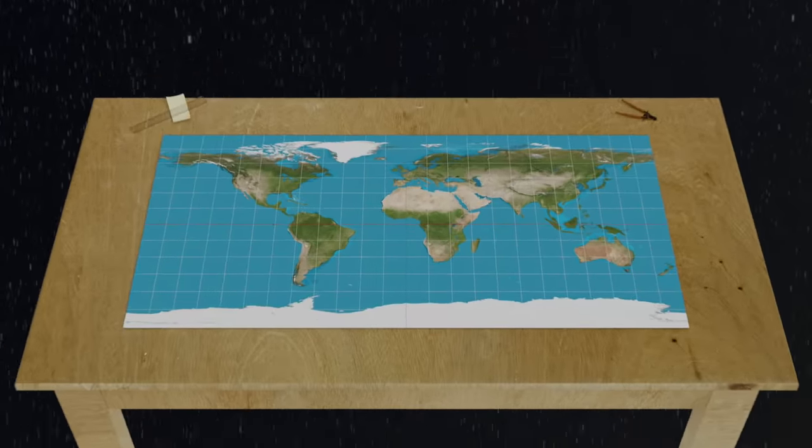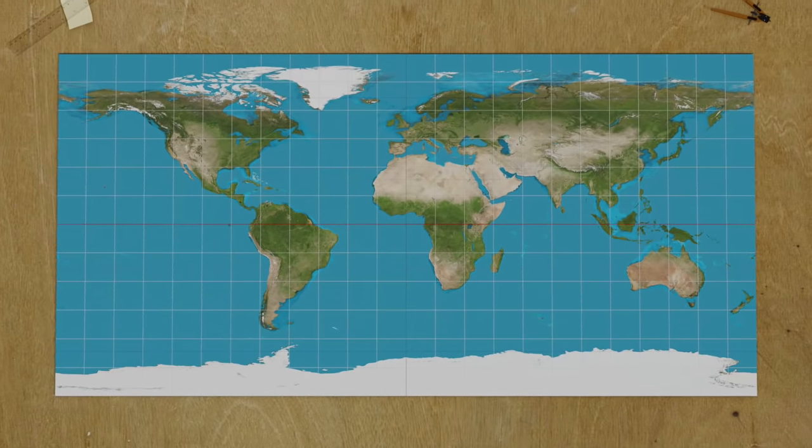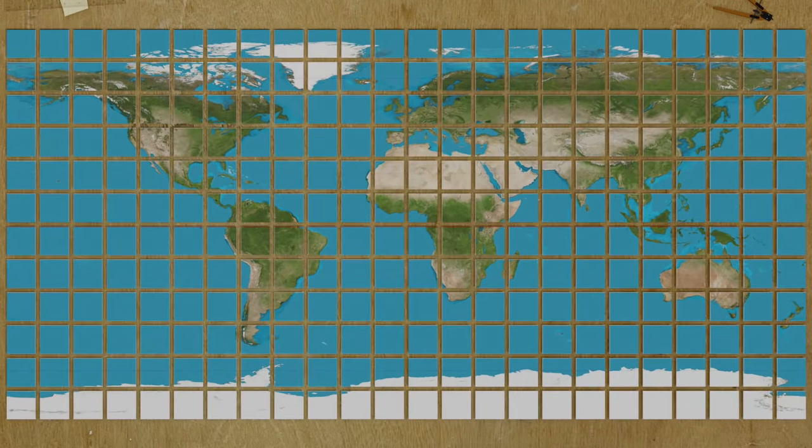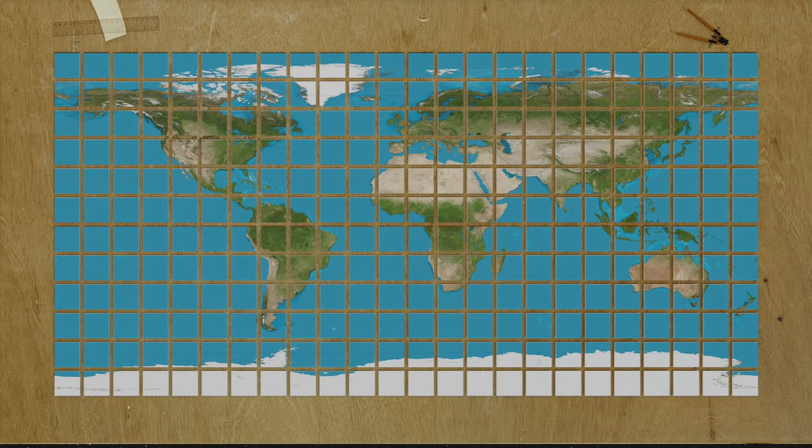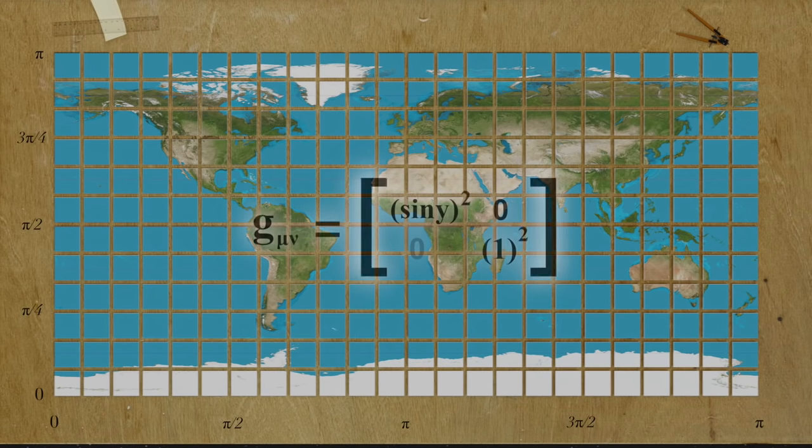First, let's cut the map into many tiny squares. Next, let's impose the following metric on each square.